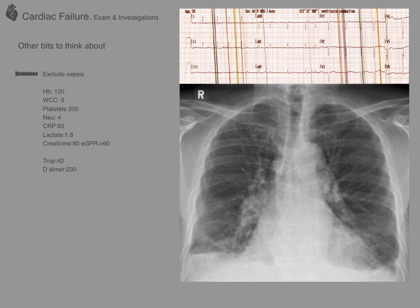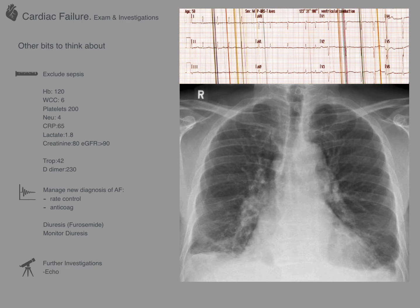The chest X-ray shows a degree of pulmonary congestion and some subtle bilateral pleural effusions. In terms of managing this patient acutely, the first priorities are better rate control of his atrial fibrillation, considering stroke risk and whether anticoagulation is appropriate given the new AF diagnosis, and focusing on diuresis with medications such as furosemide as an inpatient. Further investigation would include an echocardiogram to assess this patient's heart function.